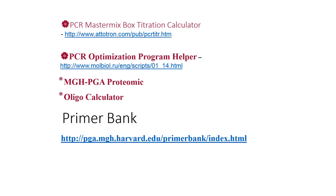PCR master mix box titration calculator is used for the master mix calculator. PCR optimization program helper which helps in PCR programming optimization process. MGH PGA Proteomics is a tool for PCR primer design for peptide sequence. Oligo calculations, oligo calculator is used to calculate Tm, GC content for given oligonucleotide.